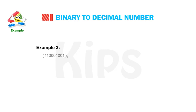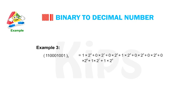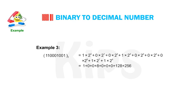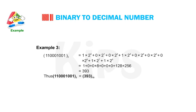Example 3: Convert 110001001 in binary to decimal. Starting from the extreme right, we multiply each binary digit by 2 raised to the appropriate power, starting at 0 for the units position, increasing the power by 1 each time and keeping the base fixed as 2. We sum up all the products and get the decimal number 393. Thus 110001001 in binary can be written as 393 in decimal.